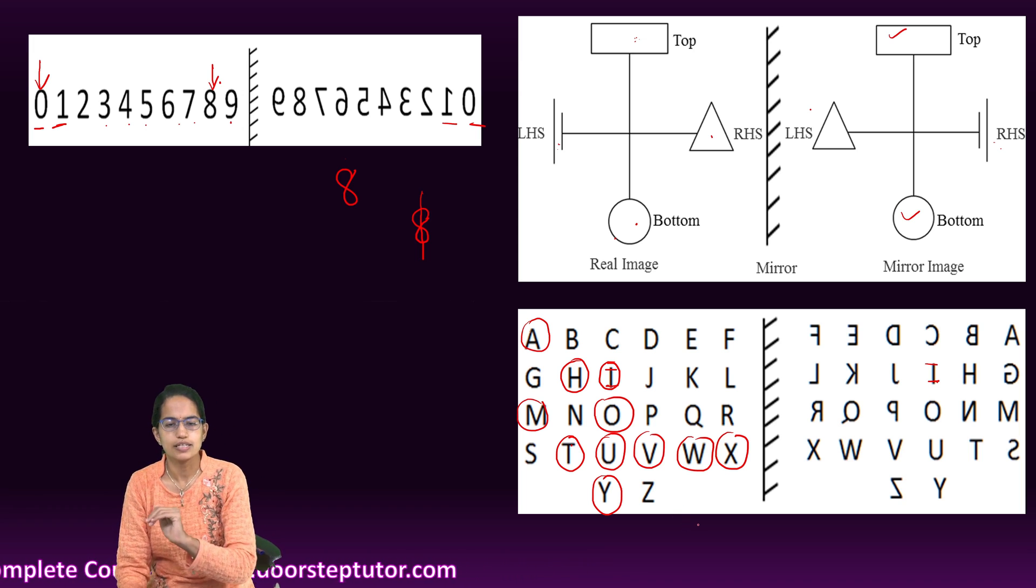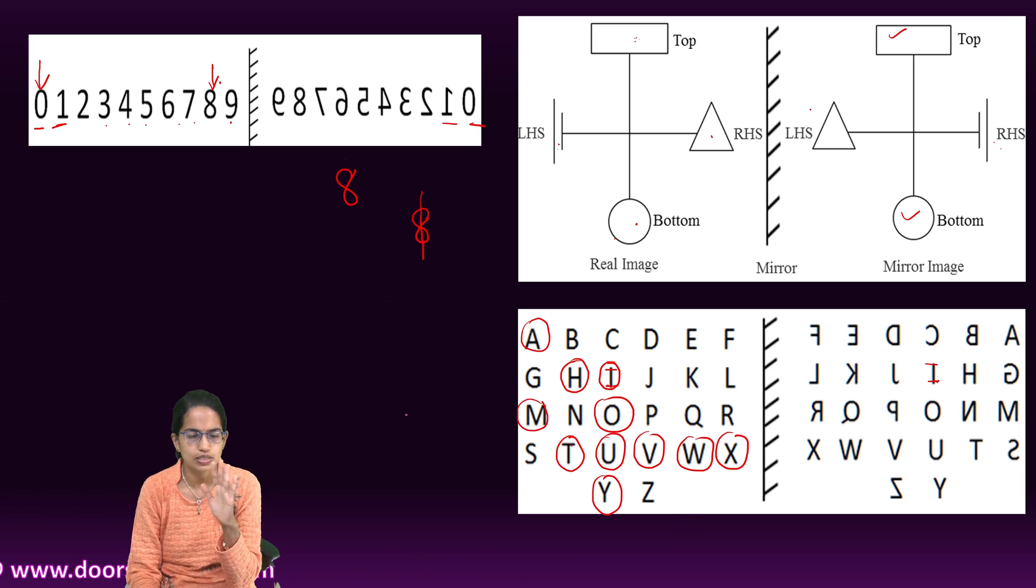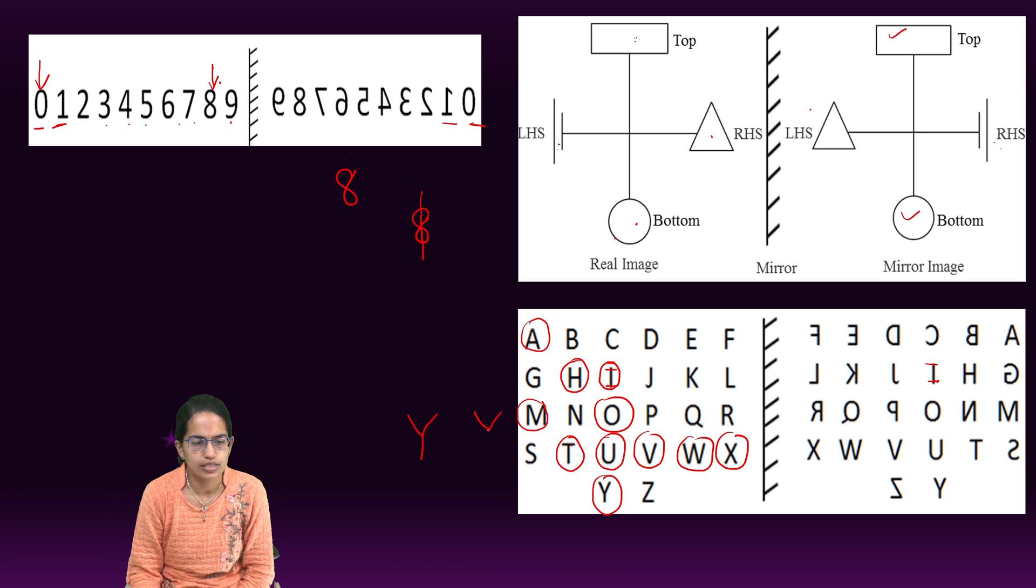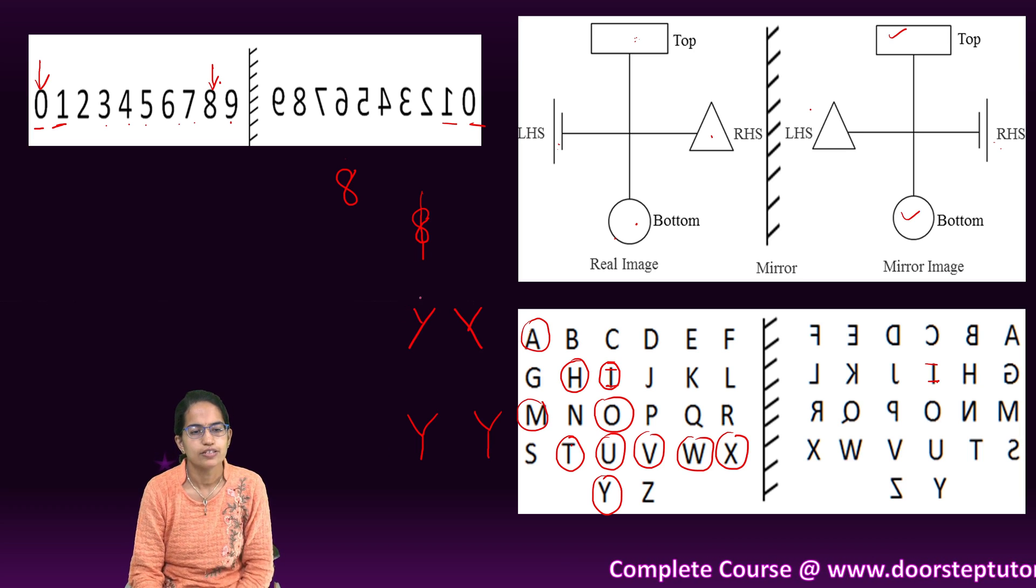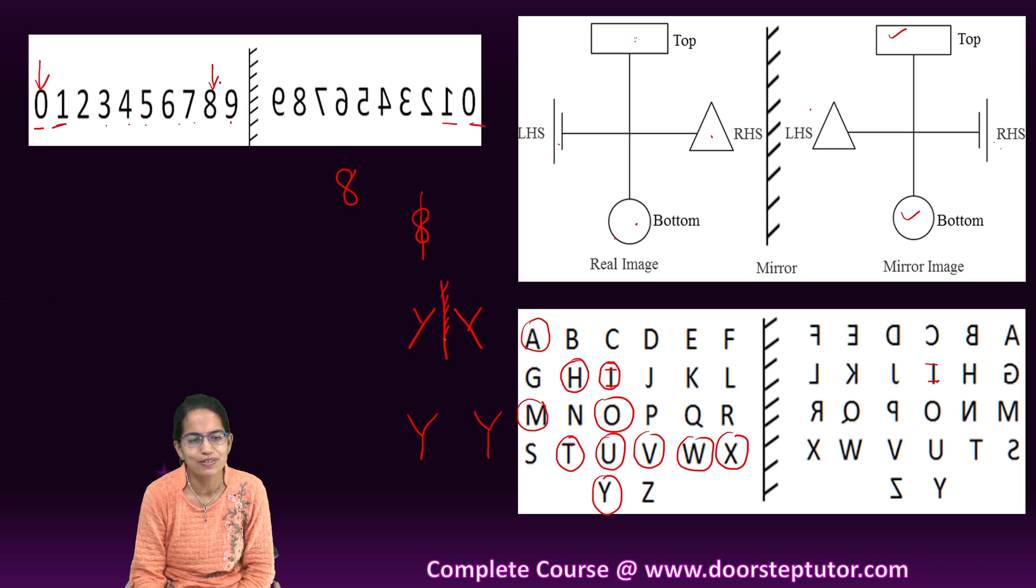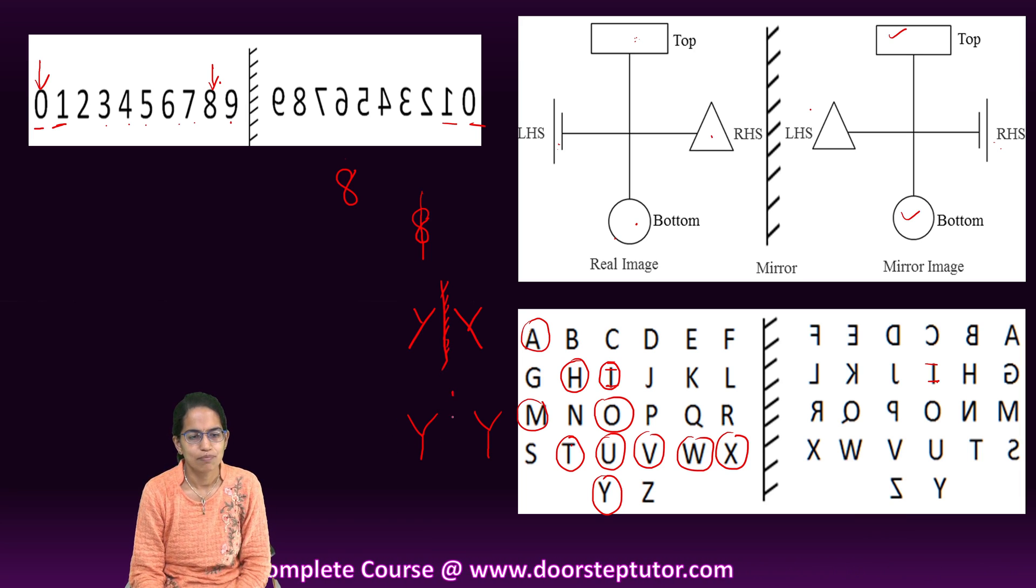So these are the letters which would remain same because they are symmetrical. So Y again, if I say this is the Y, it would remain same because this would be the Y.